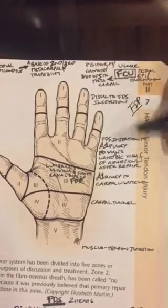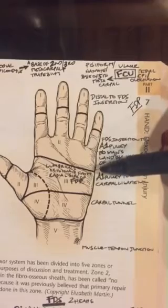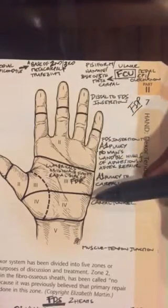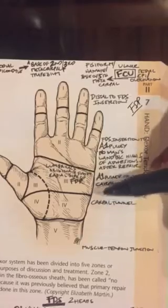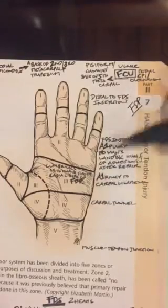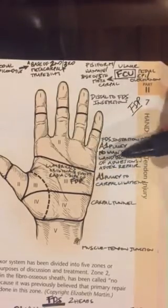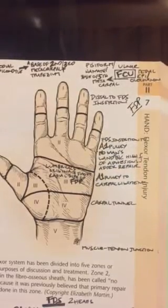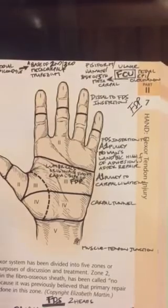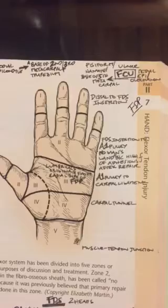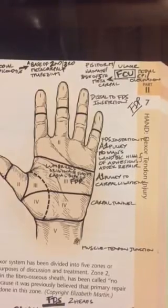From the A1 pulley to the distal edge of the transverse carpal ligament, that is defined as zone three. This is where also the lumbricals are going to originate from the radial side of the flexor digitorum profundus. This is also why it's an important area because you start getting a lot more muscles.